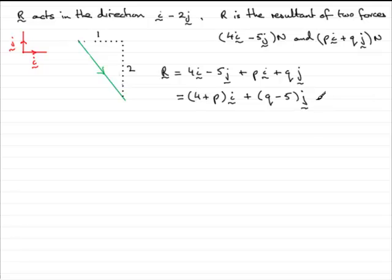So we've got our vector R, but how does that help? Well we've got another fact. We know that R acts in the direction of the vector i minus 2j, which I drew earlier in this direction. So it doesn't mean to say that R is this vector. If it's parallel, it's going to be a multiple of this vector.